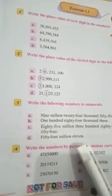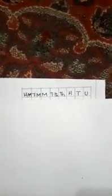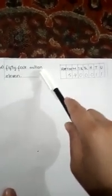Dear students, Part D is fifty-four million, eleven. We draw a block for: unit, tens, hundred, thousand, ten thousand, million, and ten million. Fifty-four goes in ten million and million. The remaining places — ten thousand, thousand, and hundred — are missing, so we put zeros there. Eleven goes in tens and unit. After three numbers, we put a comma.